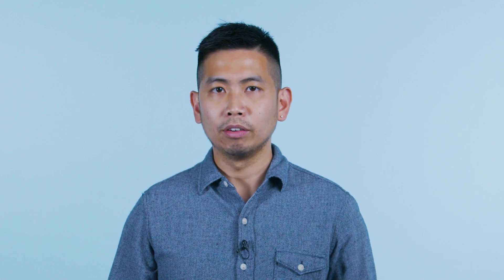There are a number of limitations with a Confluent peering network to be aware of. The first one is more of a limitation of cloud networking in general: cloud networks don't support transitive network connectivity. That is, you can't connect from one network to another through an intermediate network. If you want to access a Confluent network from a VPC or VNet, it generally has to be directly peered to the Confluent network. There are a few exceptions, which we'll discuss in a little bit, but generally speaking, you can't transit through one VPC or VNet to get to another one.